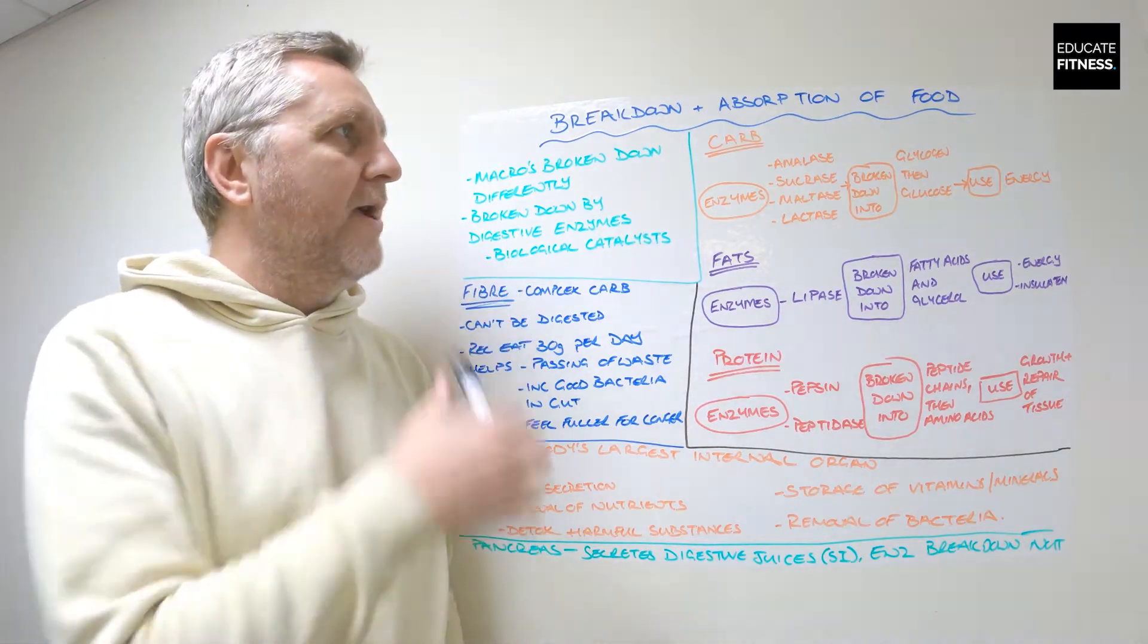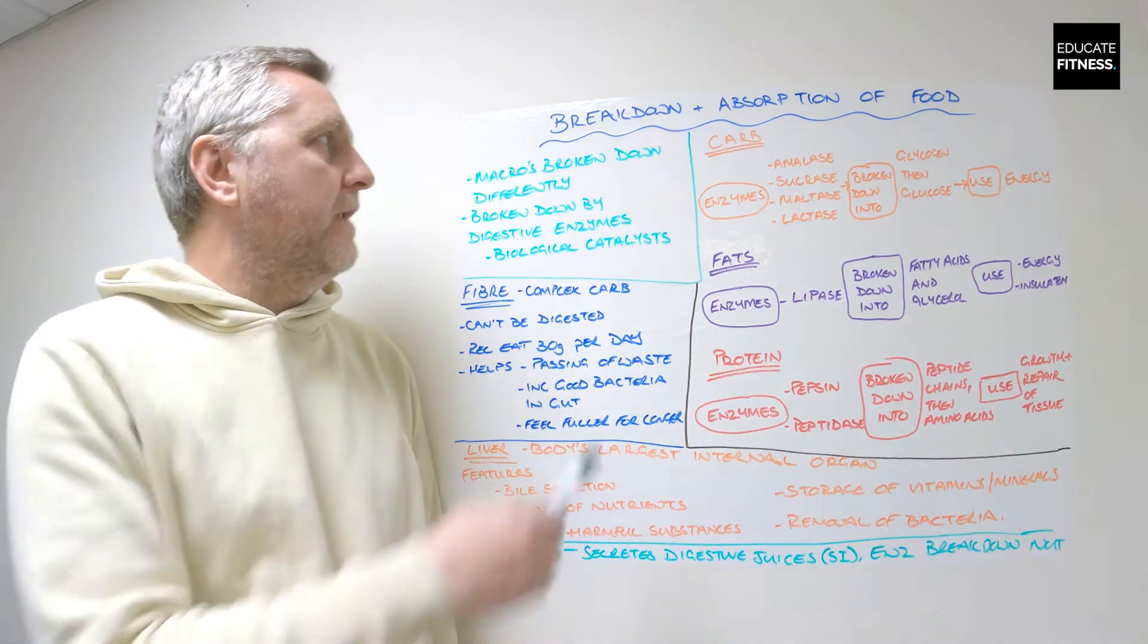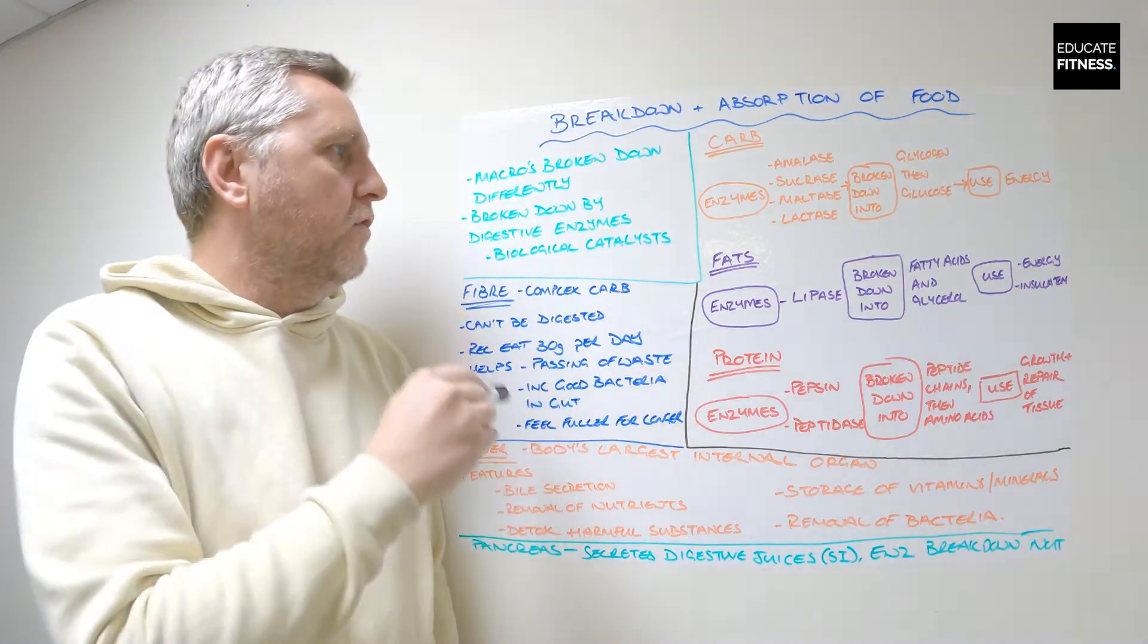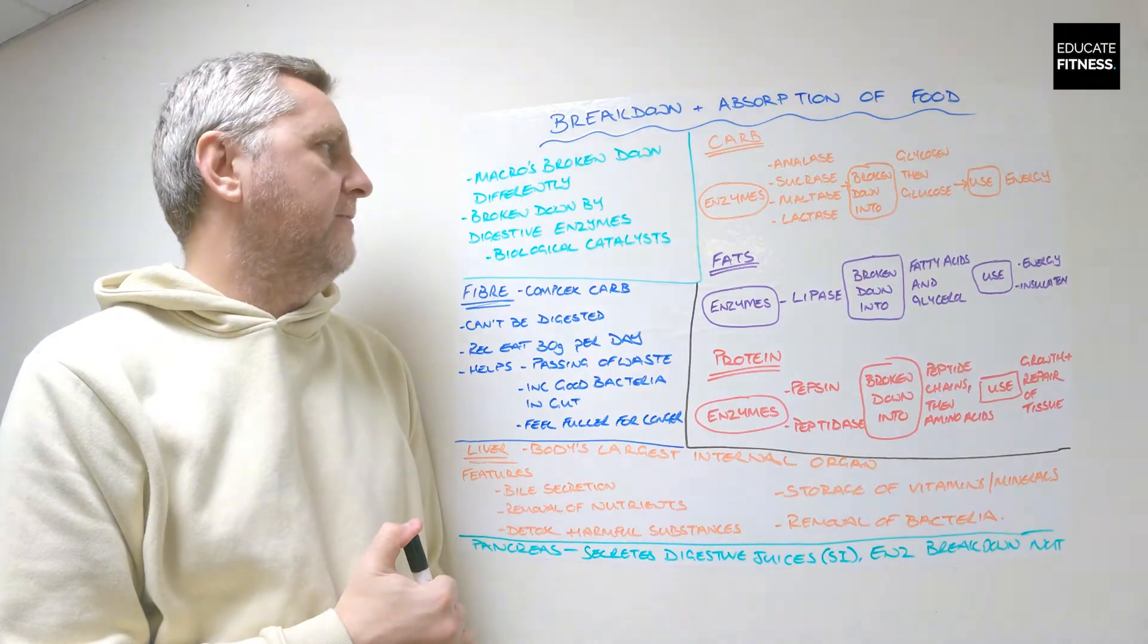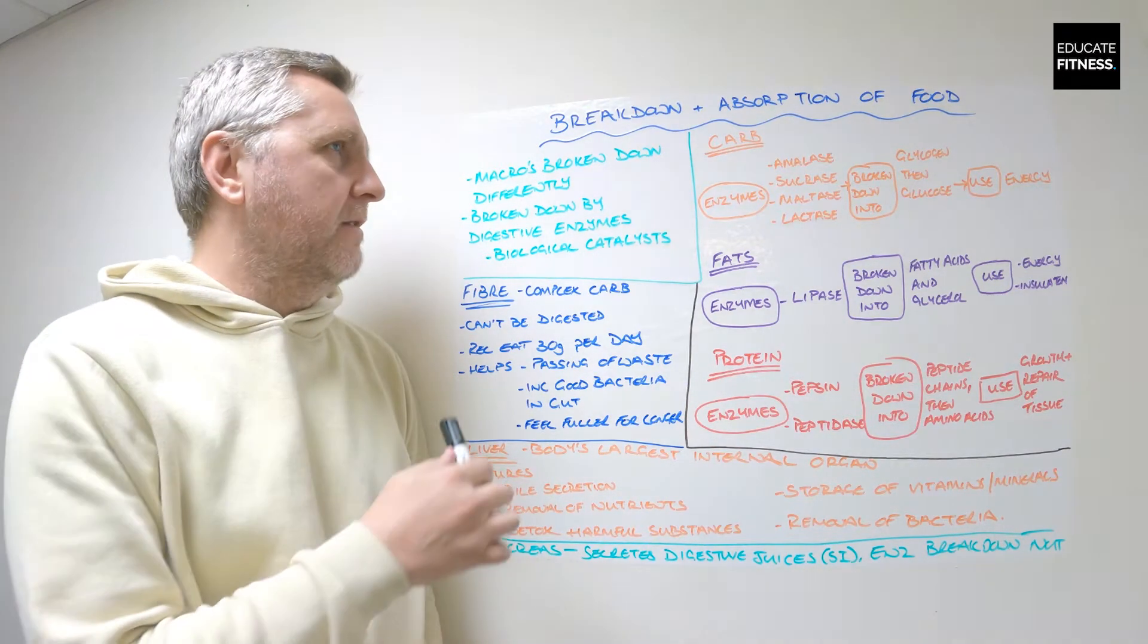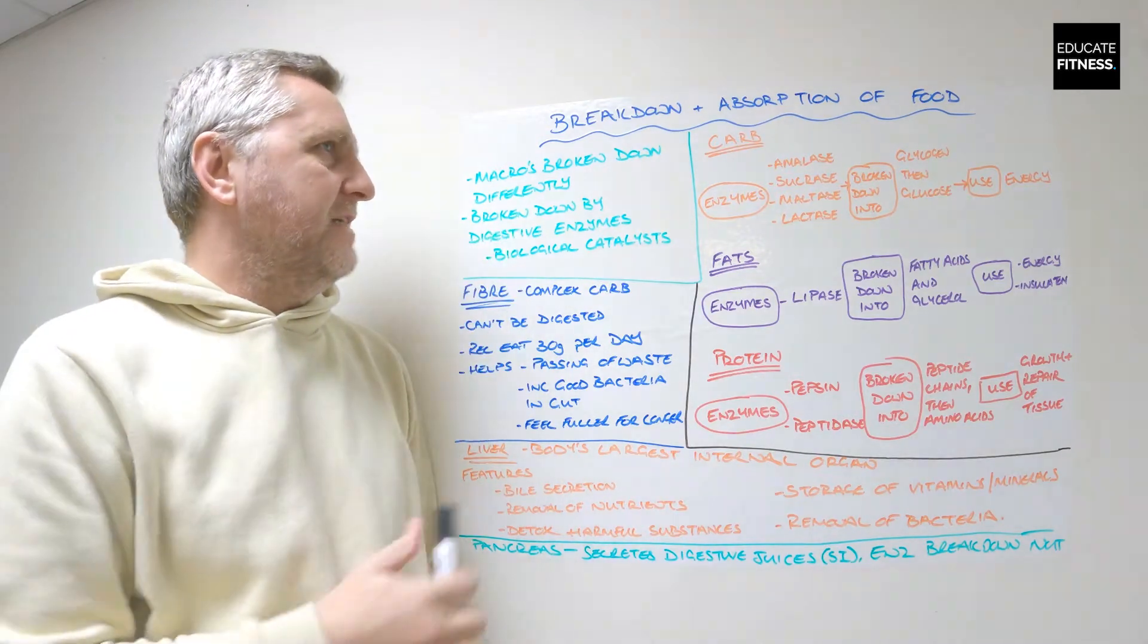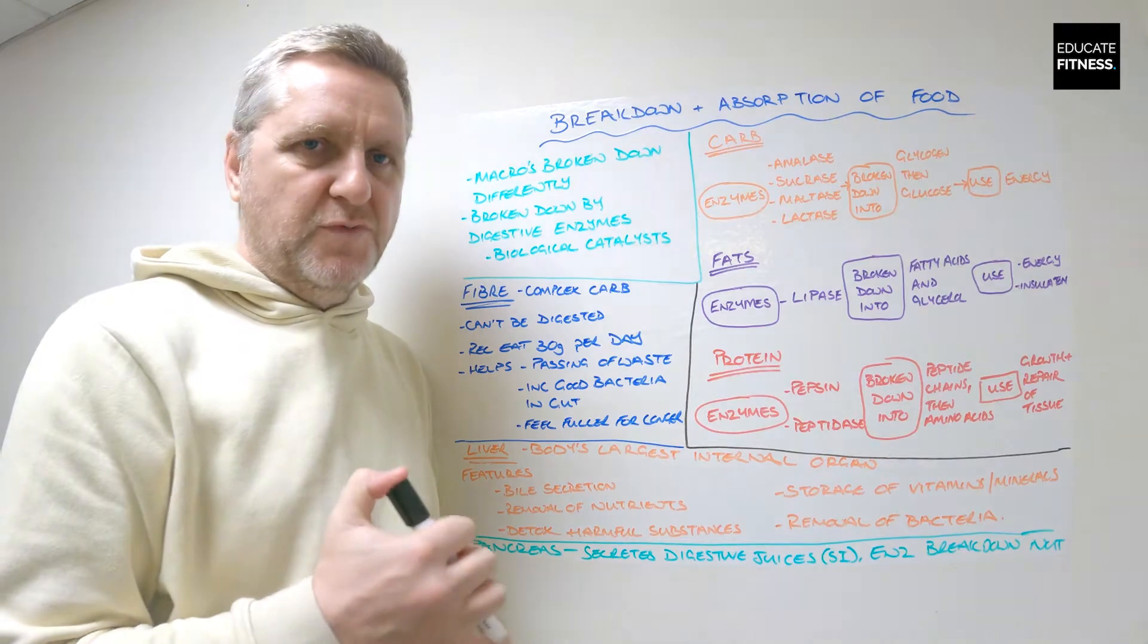So this is the next step, the breakdown and absorption of foods. Major food groups are broken down in different ways. Macros—carbs, fats and proteins—are broken down differently. Food is broken down at different points in the alimentary canal by digestive enzymes, which are basically biological catalysts that speed up the process of the breakdown of nutrients.